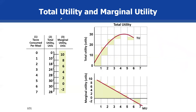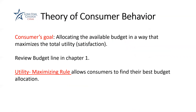This is called consumer equilibrium, or the utility maximizing rule. Our goal is to find a point on the budget line that gives you maximum satisfaction from your consumption with the limited budget you have and given prices. First, you allocate your budget among different goods and services you want to consume. The next step is to calculate the marginal utility for all the goods and services you consume.